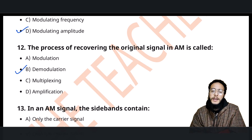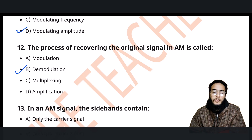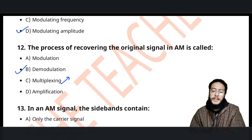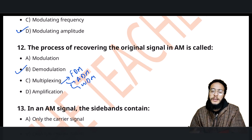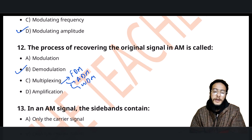Multiplexing means using a single channel to pass different frequencies. It has many types: frequency division multiplexing, amplitude division multiplexing, wavelength division multiplexing, and higher types like orthogonal frequency division multiplexing (OFDM), which we will study later.